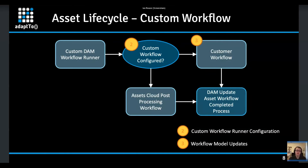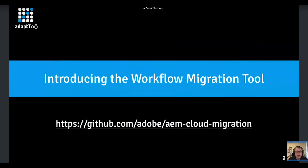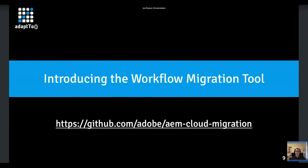If a custom workflow is not configured, we have an out-of-the-box workflow called the Assets Cloud Post Processing Workflow, which currently contains a step to submit the asset to the smart tagging service. After either workflow finishes, the final step executed will be the DAM Update Asset Workflow Completed process. Customers are required to have this in their custom workflow so the asset gets marked as completed when fully done processing. To lower the barrier to entry for migration, we developed a workflow migration tool available on GitHub as an open source project.